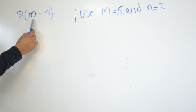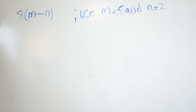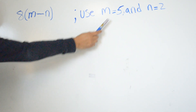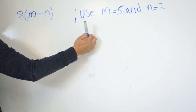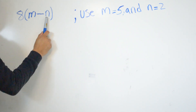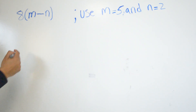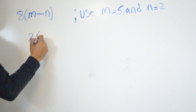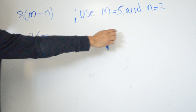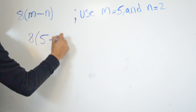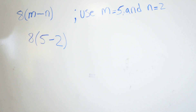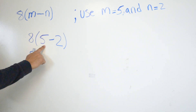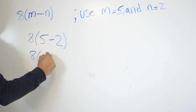In this next problem we're going to be multiplying 8 times parentheses m minus n. Same thing as the other problem — wherever I find m I'm just going to put whatever number is given to us. In this situation m is given to us as 5, and n is given to us as 2. So we plug in those numbers: 8 times parentheses 5 minus n, which is 2. We still have to follow the order of operations, so we have to evaluate what's inside the parentheses first.